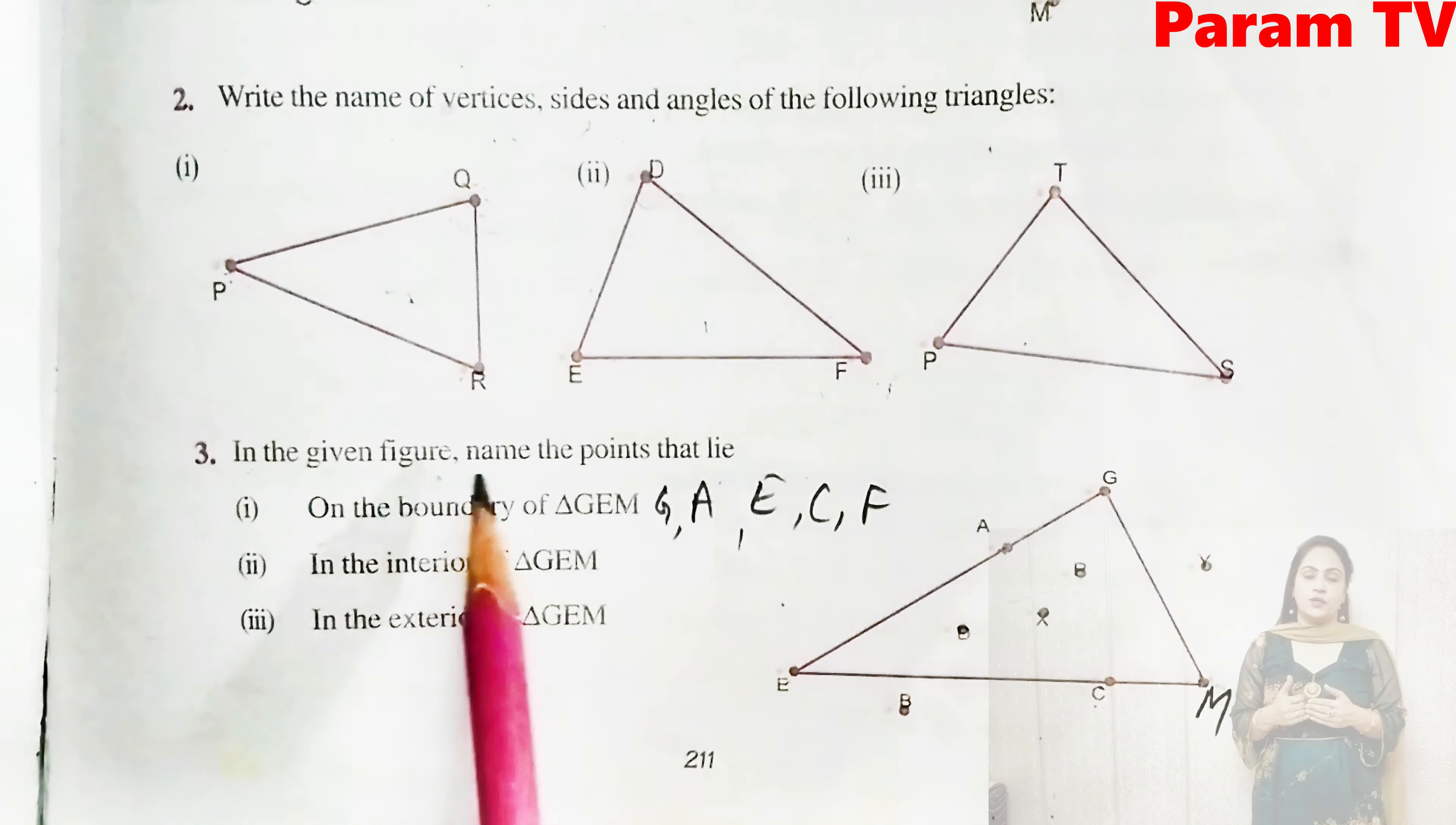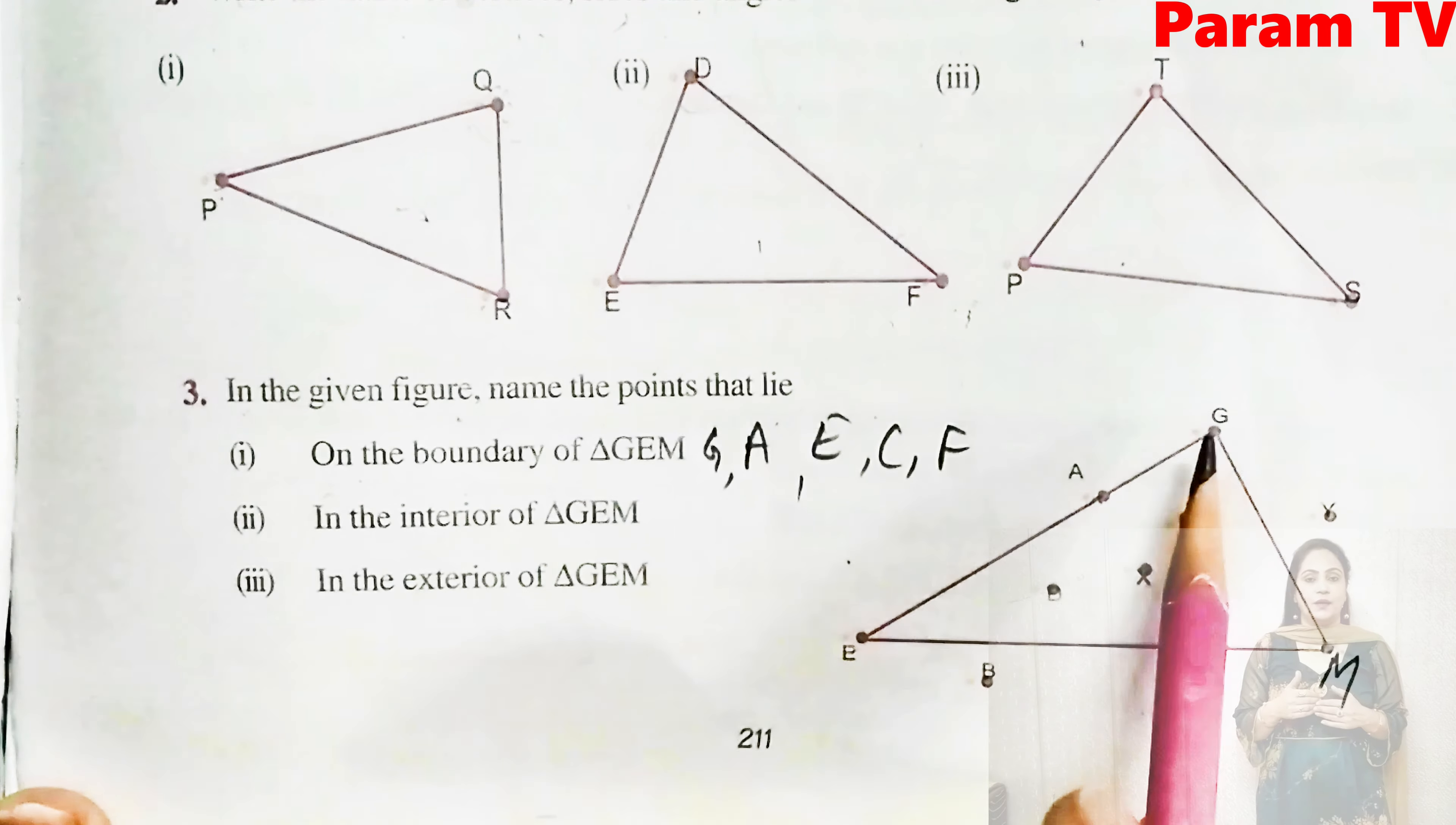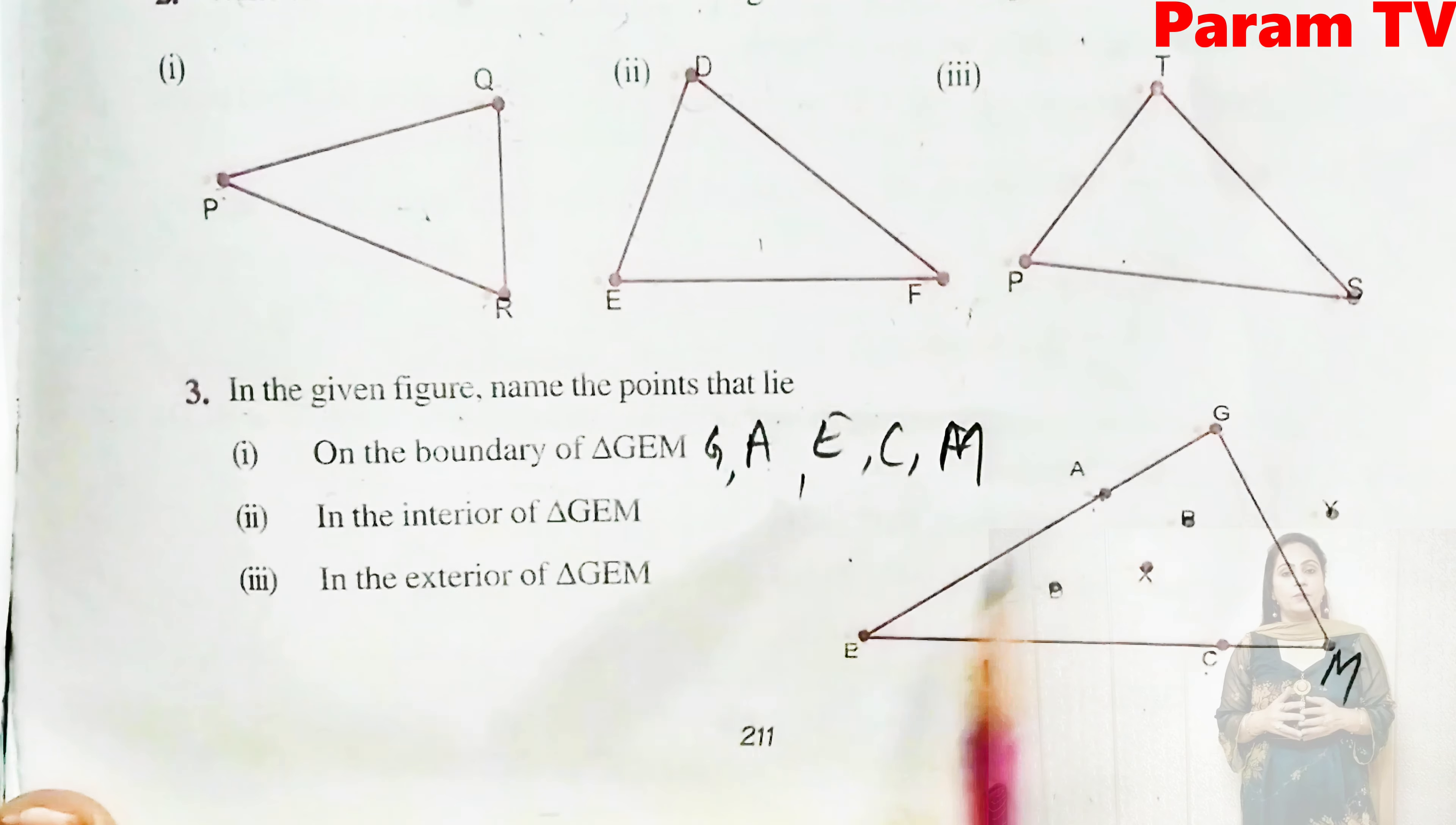Question number three. In the given figure, name the points that lie. Again, same question. A triangle is given. Some points are inside it. Some are outside it. Some are on the boundary. First is on the boundary. See the boundary. G, A, E, C, and M. So G, A, E, C, and M. These are lying on the boundary.